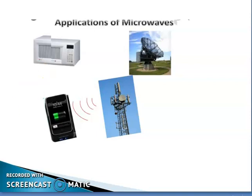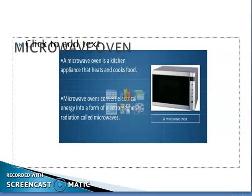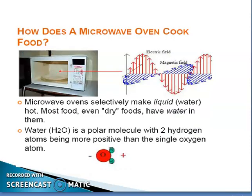What is a microwave oven? A microwave oven is a kitchen appliance that heats and cooks food. It always converts electrical energy into a form of electromagnetic radiation called microwaves.